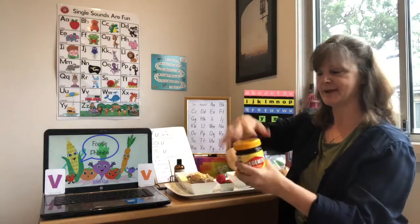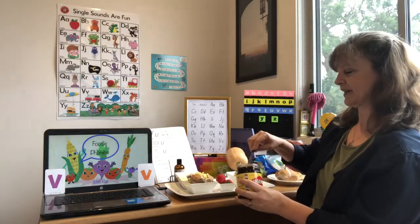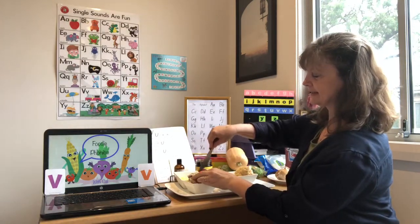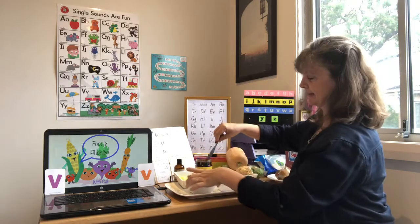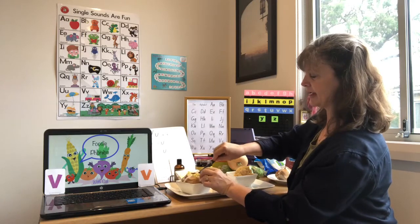Okay, then we are going to take some Vegemite. Whoopsie daisy, I dropped the lid. And we are going to spread it just on the inside of each little segment. There we go. Just a little bit, we don't need too much.